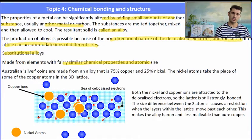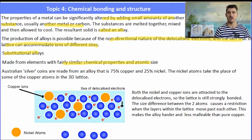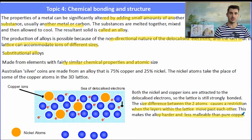Now by altering the different sizes of the ions that causes a restriction between the layers. So now it's a lot harder for the layers to slide past each other. The bigger nickel ions are going to hit the copper ions below. So that means it's harder and less malleable.